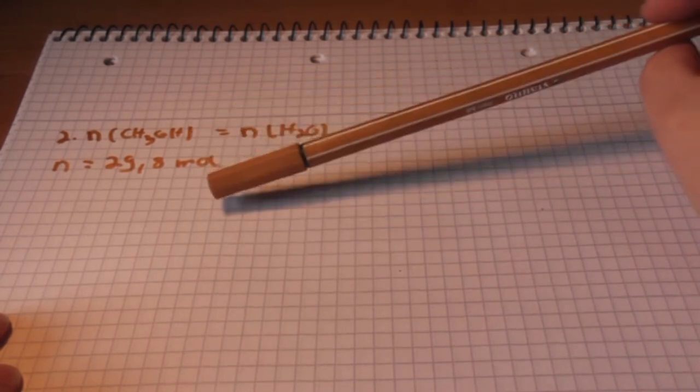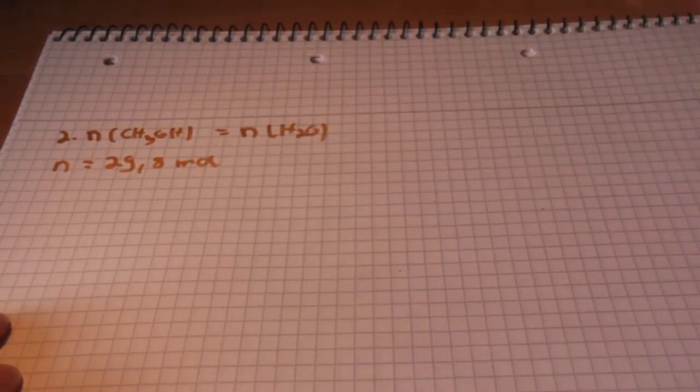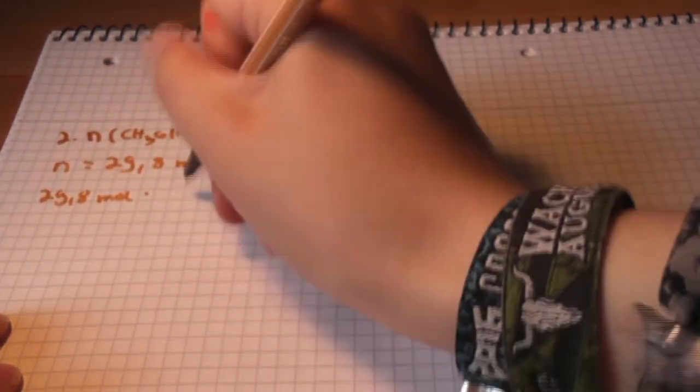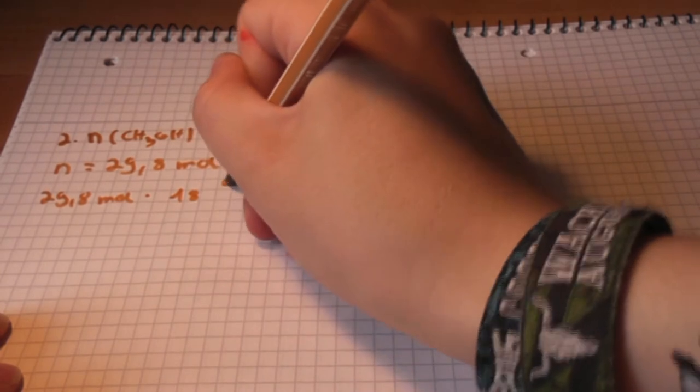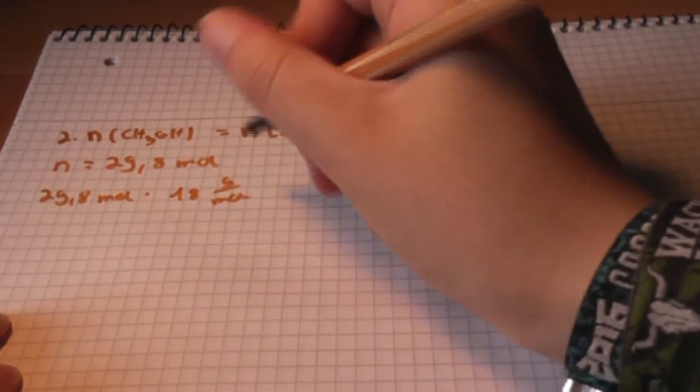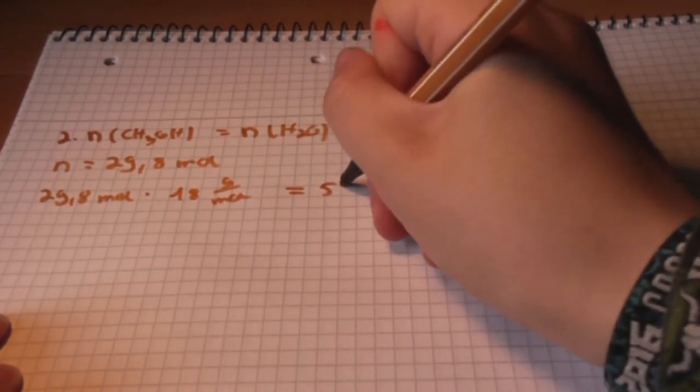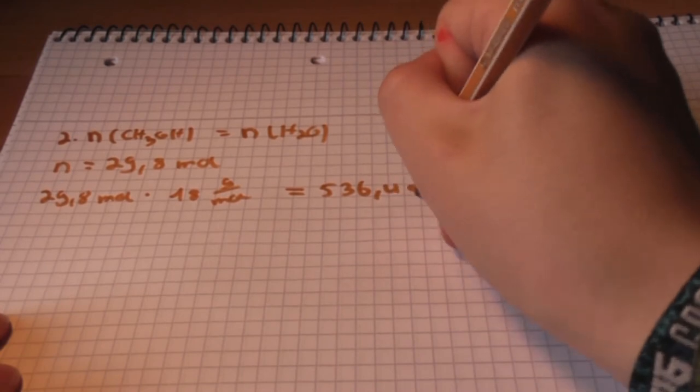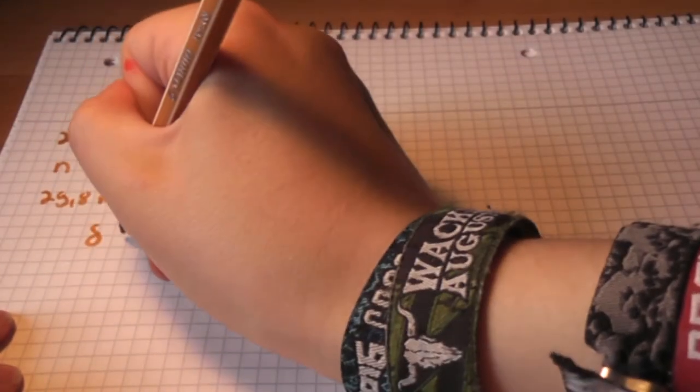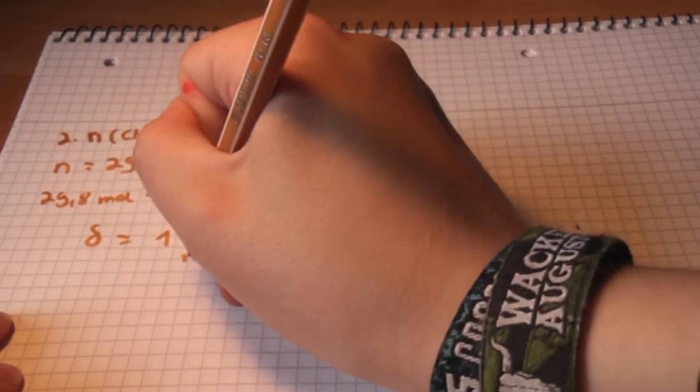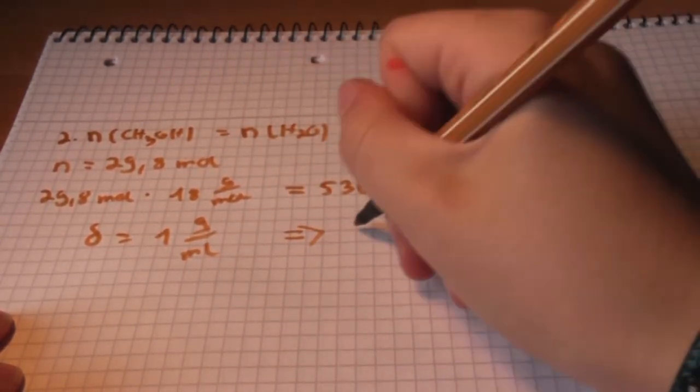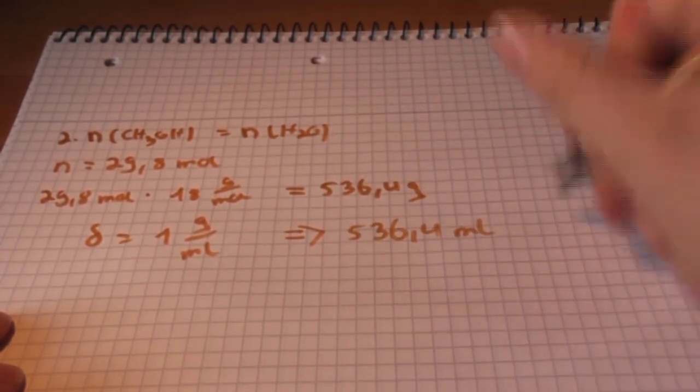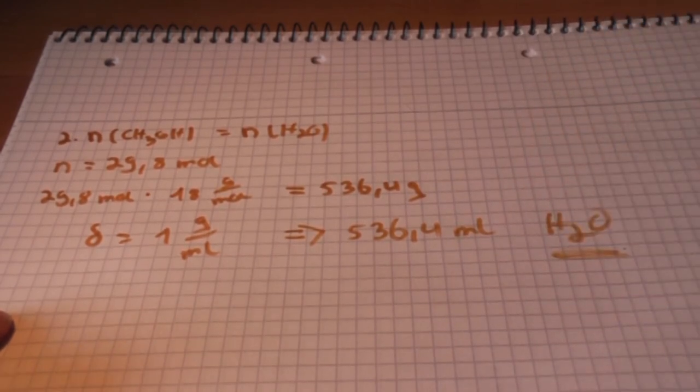But we want to know how much milliliter we get. So we have to multiply it with the molar mass of water which is 18 gram per mole. And so we get 536.4 gram water. The density of water is nearly 1 gram per milliliter. So we also get 536.4 milliliter of liquid water.